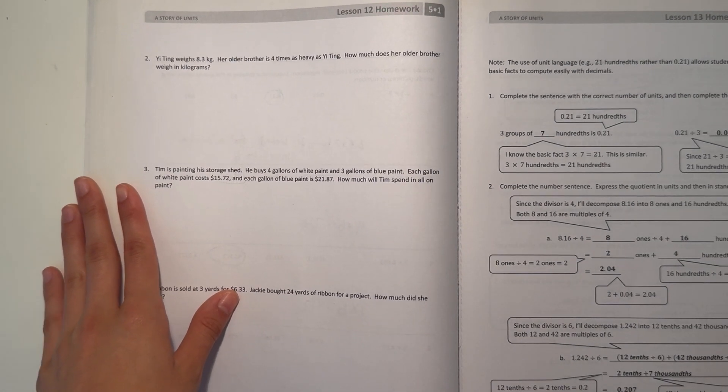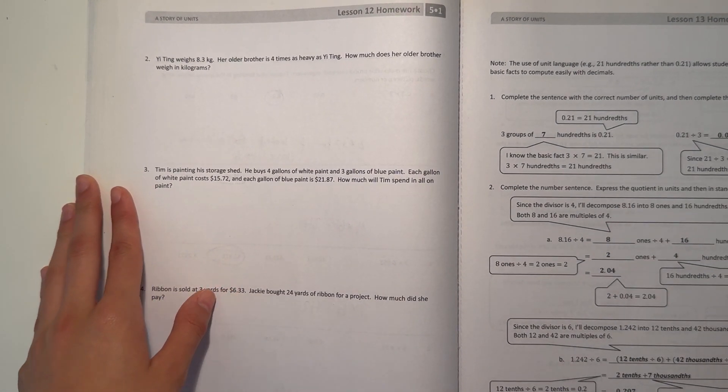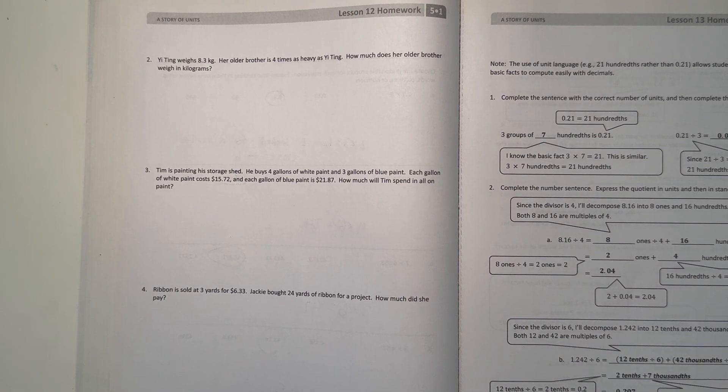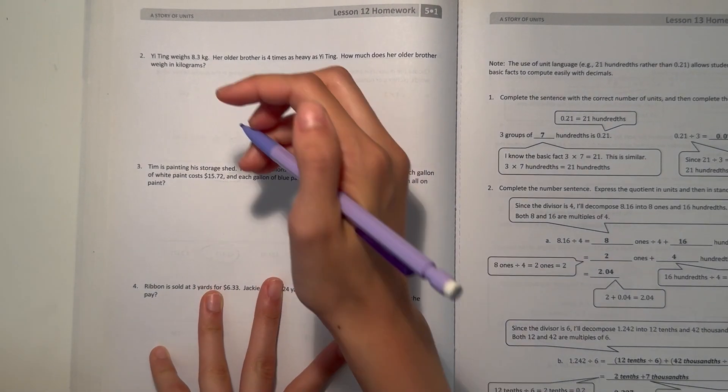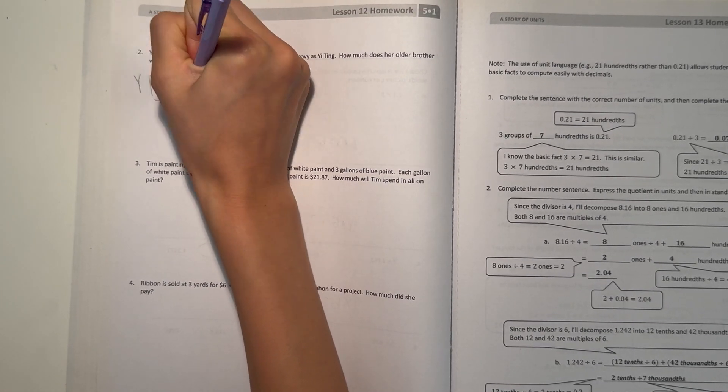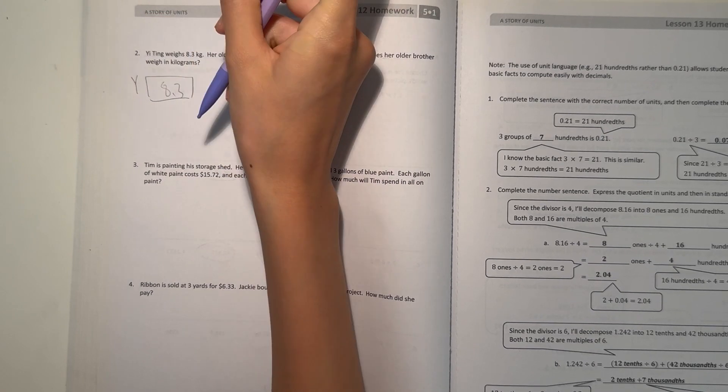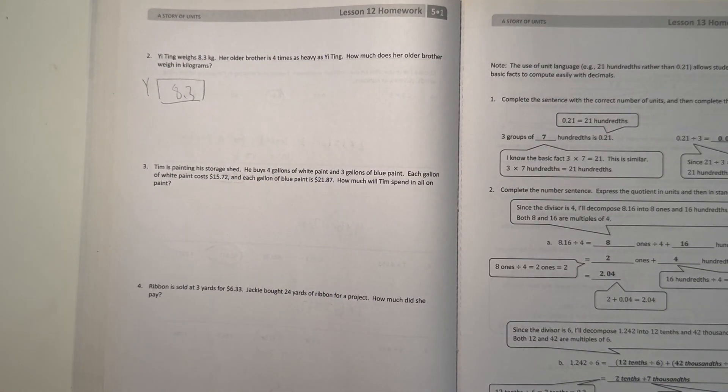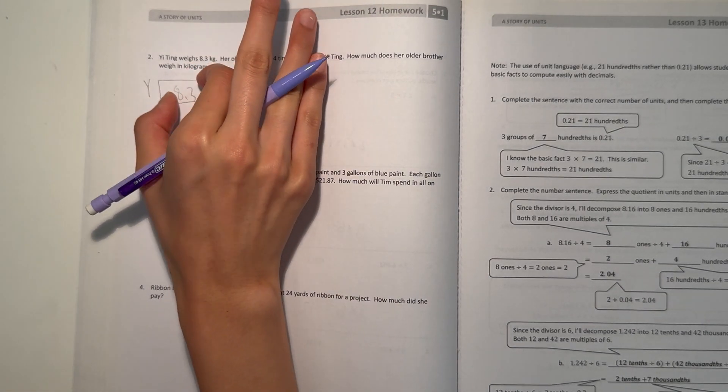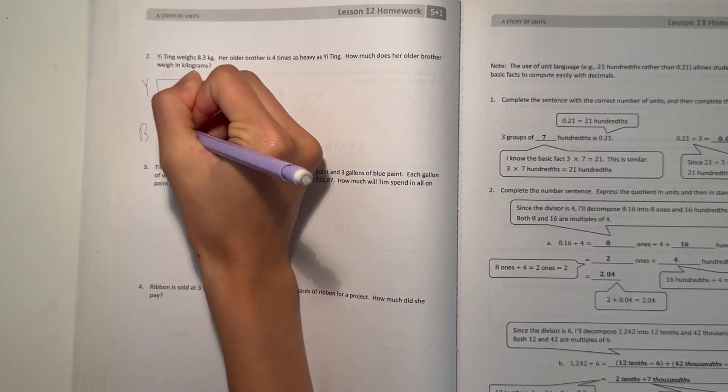So Aubrey's older brother is 4 times as heavy as her. How much does her older brother weigh in kilograms? Alright, so we know we can write y for her. She weighs 8.3 kilograms. And since her brother is 4 times as heavy, then her brother is 4 times of this. So we can do b for brother.